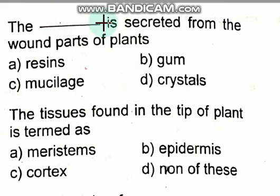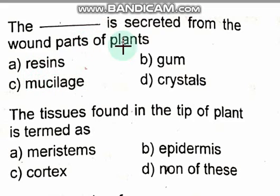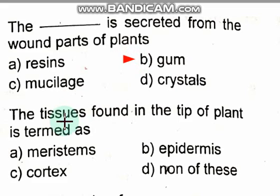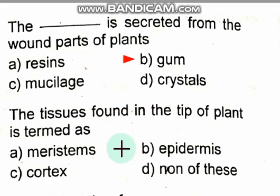Gum is secreted from the wound part of plants — that is the correct answer. The tissue found at the tip of a plant is known as meristematic tissue.